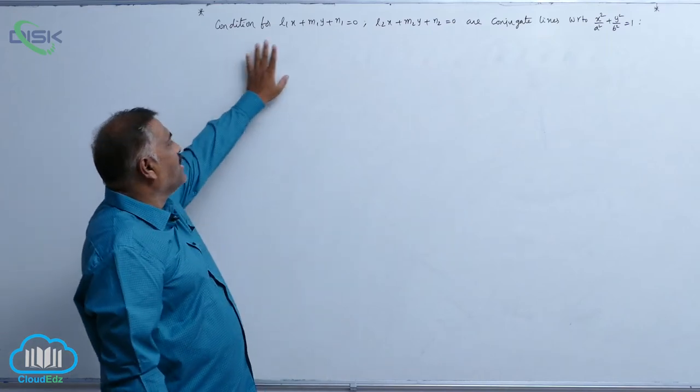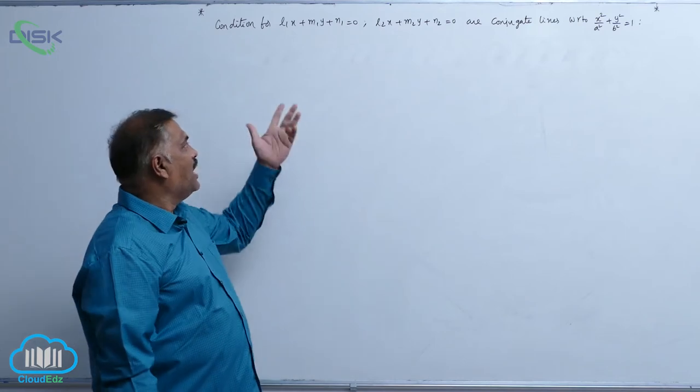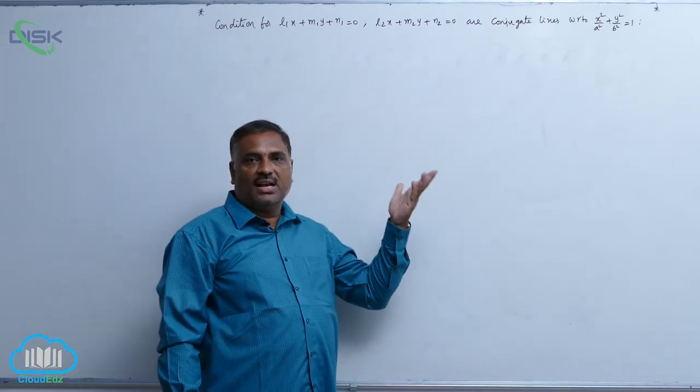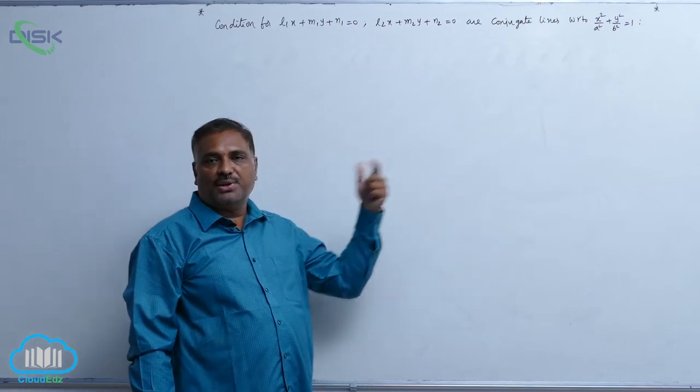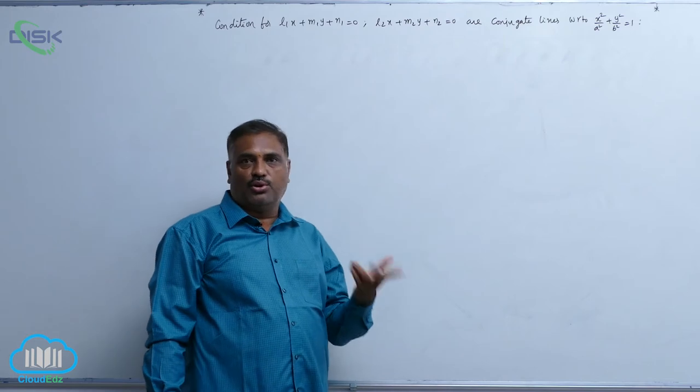We will discuss condition for the lines l1x plus m1y plus n1 equal to 0, l2x plus m2y plus n2 equal to 0 to be conjugate lines with respect to the ellipse equation x square by a square plus y square by b square equal to 1.